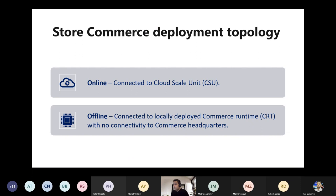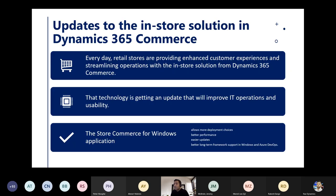On the store topology, online is directly connected to the cloud scale unit, and offline connects to the CRT when there is no connectivity to the head queue. With updates to the store solution, everyday performance is improved. The Store Commerce Windows application provides more deployment choices, easier updates, and long-term framework support.